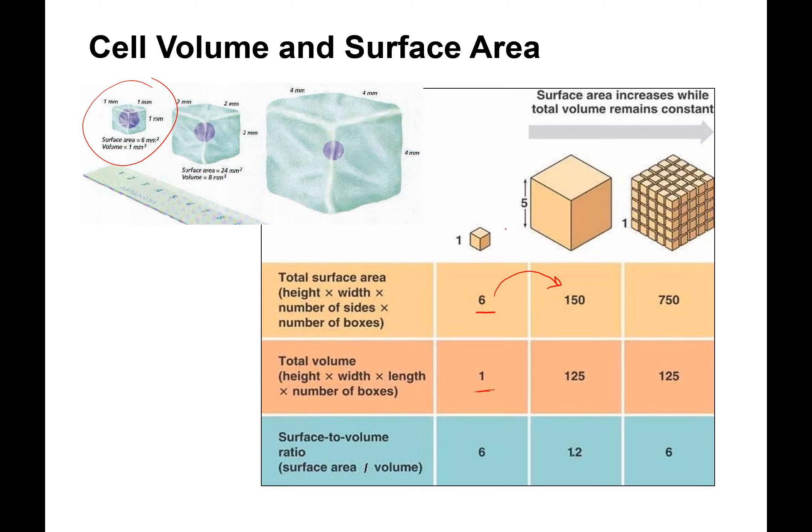Say we wanted to make a larger cell. So we increased this size by 5, which increased the surface area by 25. So 150 divided by 6 is 25. So we increased the surface area 25 times. But what happened to the volume is it increased 125 fold. That's huge. So when you just slightly increase the surface area, you really increase the volume. And the surface area to volume ratio goes way down when you have this large volume. This is not good.